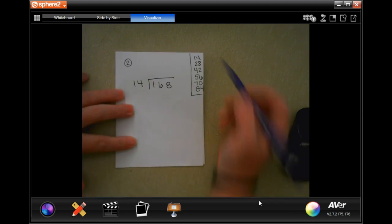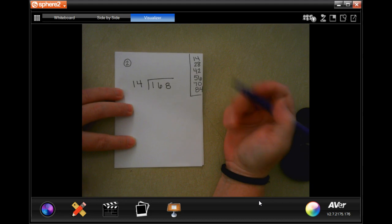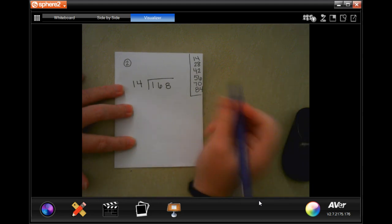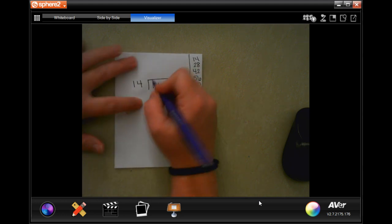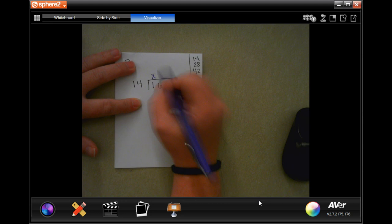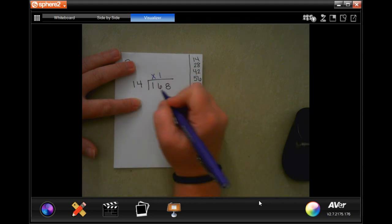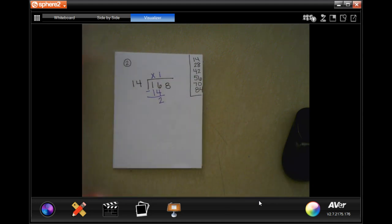I have over here written down the multiples of 14 because I do not know those off the top of my head. So I don't want to do any more than that, but let's get started. So 14 will not go into 1, placeholder. 14 will go into 16 one time. 1 times 14 is 14. I subtract. I get 2.